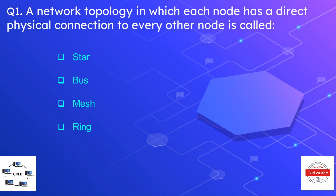Question number one: a network topology in which each node has a direct physical connection to every other node is called — options are star, bus, mesh, and ring. The correct answer is mesh.